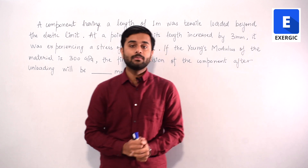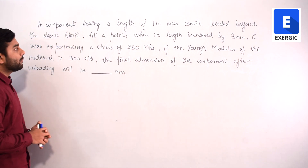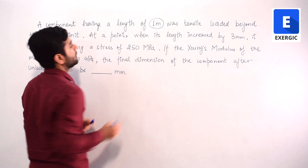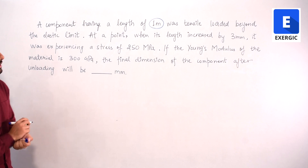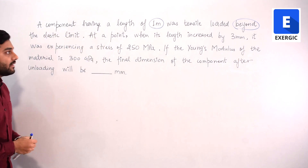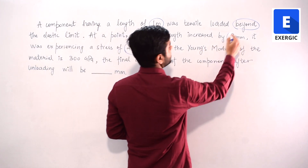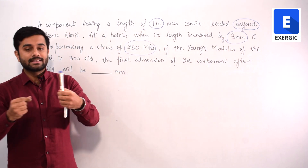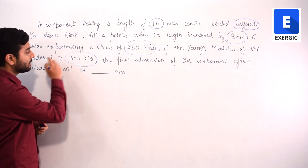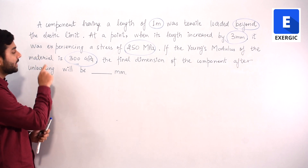Let's look at this question from the elastic recovery and permanent set topic. A component having a length of 1 meter was tensile loaded beyond its elastic limit. At a point when its length increased by 3 mm, it was experiencing a stress of 250 MPa. If the Young's modulus of the material is 300 GPa, find the final dimension of the component after unloading in mm.